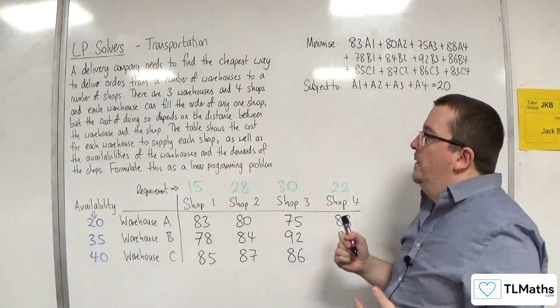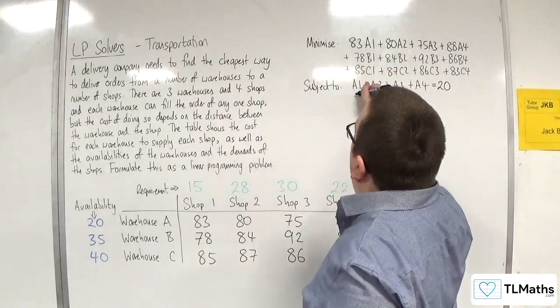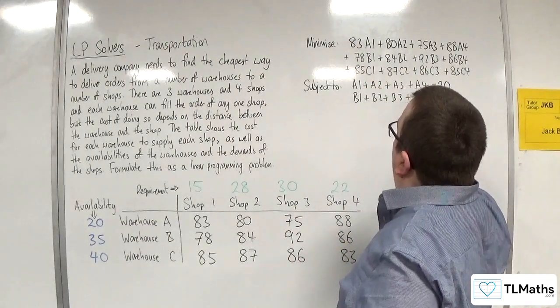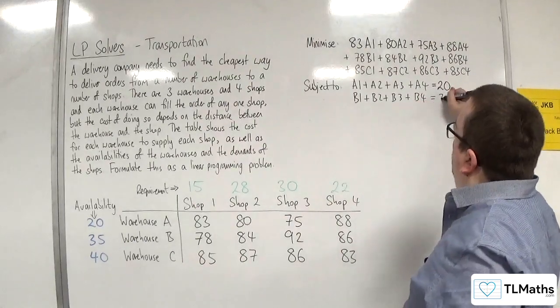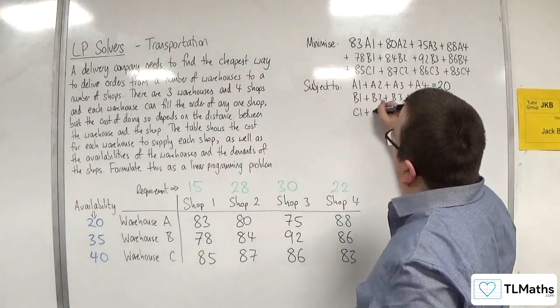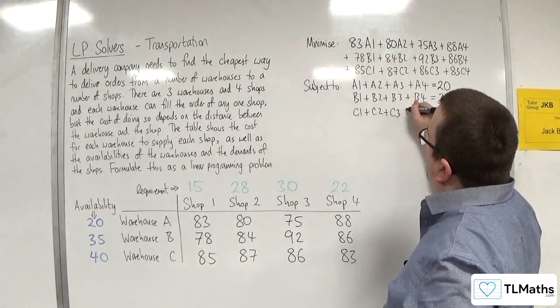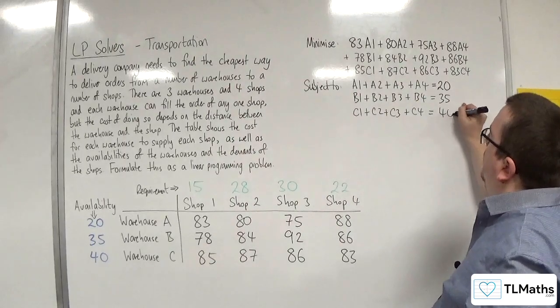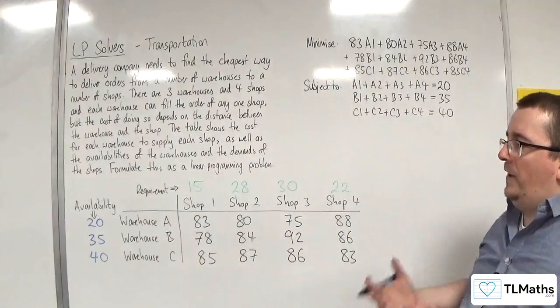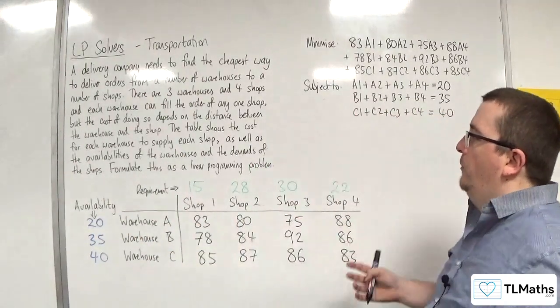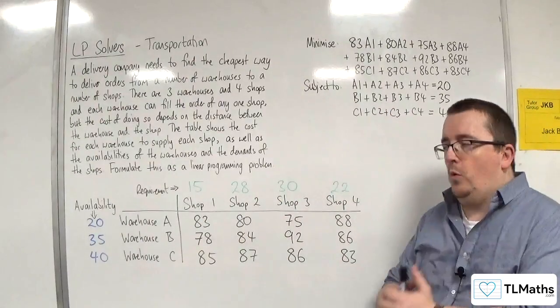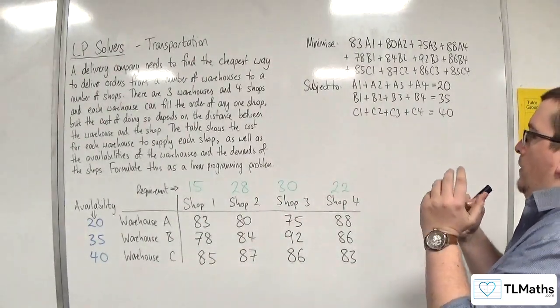So then B1 plus B2 plus B3 plus B4, that's got to be equal to 35, because that's how much I've got in warehouse B. And C1 plus C2 plus C3 plus C4 has got to be equal to 40. Now these have got to be equal to those because I must send out all of what I have available to the shops, because the total availability equals the total requirement.